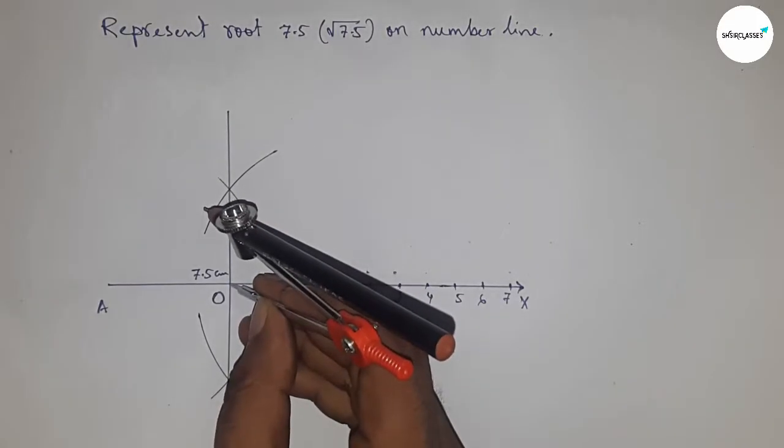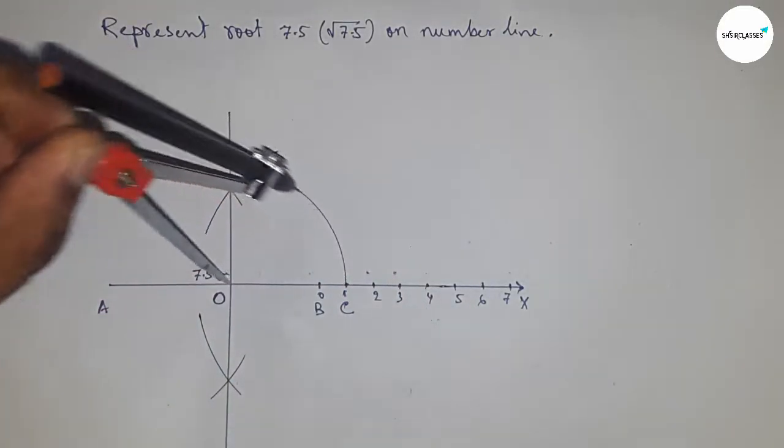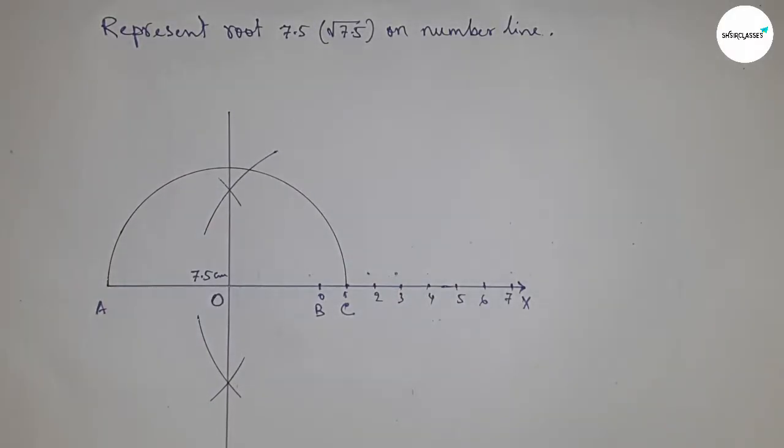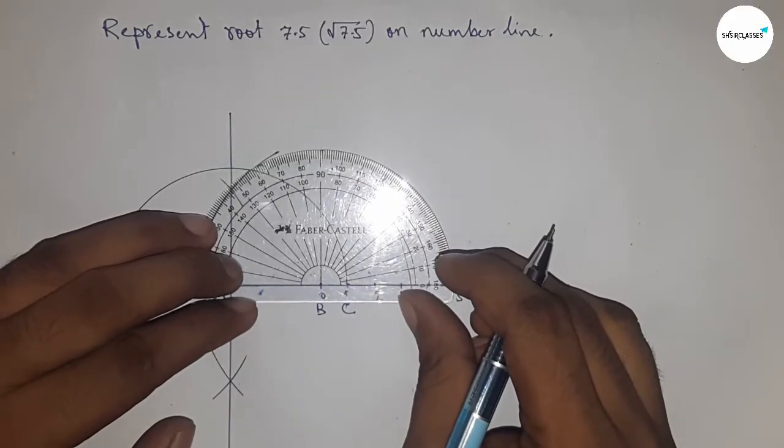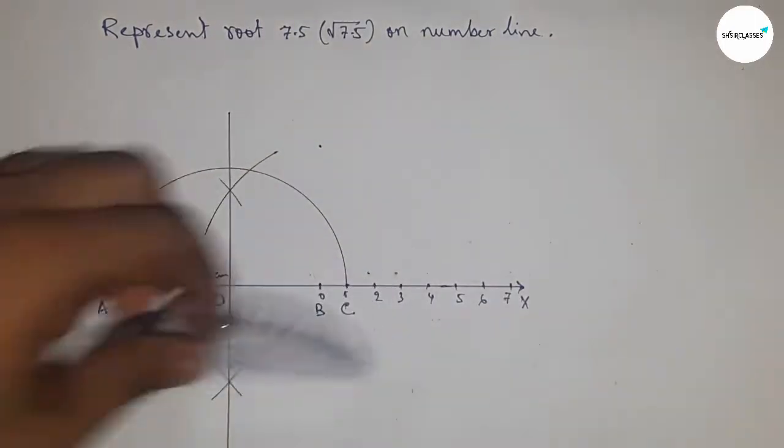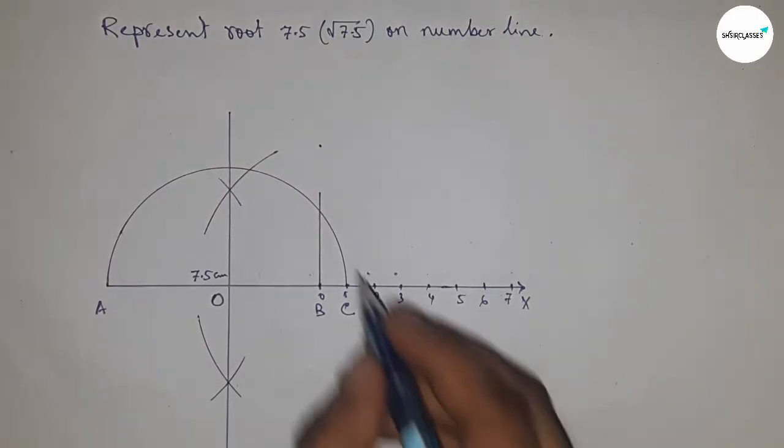Now taking the distance OA and OC to draw a semicircle. Next, having to construct a 90-degree angle on point B by using a protractor. So drawing 90 degrees on point B.